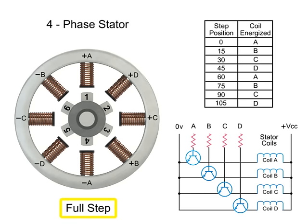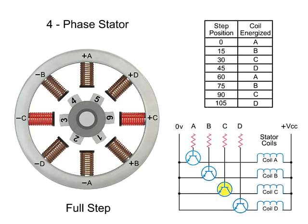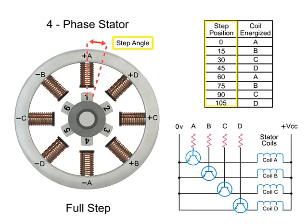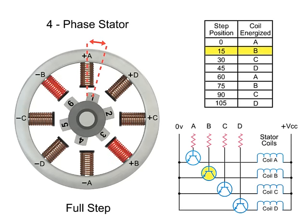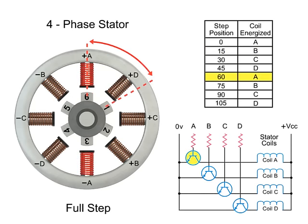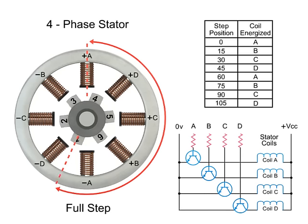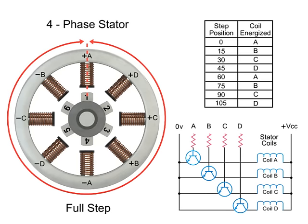For full-step mode operation, energizing each set of coils sequentially, the rotor can be made to rotate or step from one position to the next by an angle determined by its step angle. Shaft rotation is achieved by energizing both windings while reversing the current alternately, switching coils A, B, C, D one coil at a time repetitively, which will rotate the rotor in the forward direction. In this example, there are six steps arranged on the rotor 60 degrees apart, and 24 steps are required to make a full rotation at 15-degree increments.